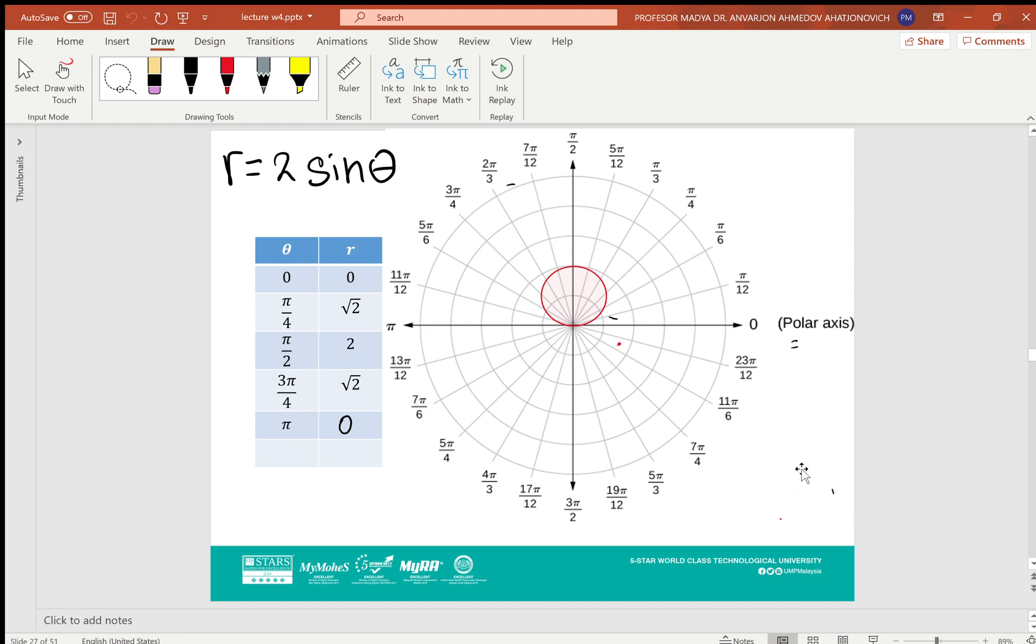We make the table. For example, θ = 0, r = 0; θ = π/4, r = √2; θ = π/2, r = 2; θ = 3π/4, r = √2; θ = π, r = 0. These points I will plot here.